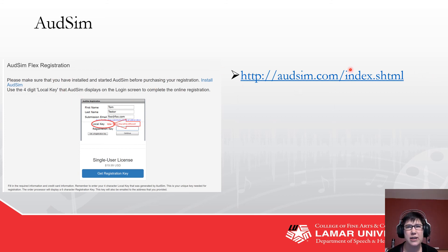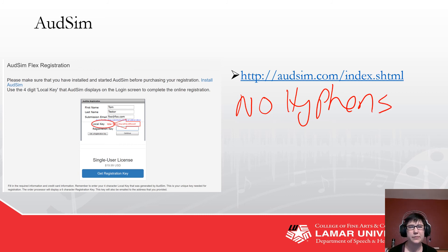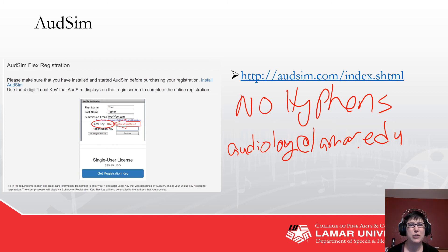When you download it from oddsim.com, you will need to register it. You'll have a four-digit local key that you'll use, and you'll put your first and your last name in it. It is important that you not use any hyphens or special characters — none of that, because it will act very badly. It's also important that you use the submission email audiology at lamar dot edu.